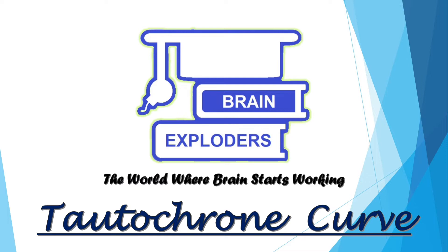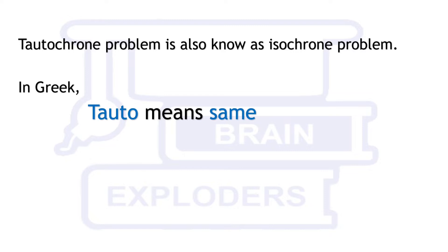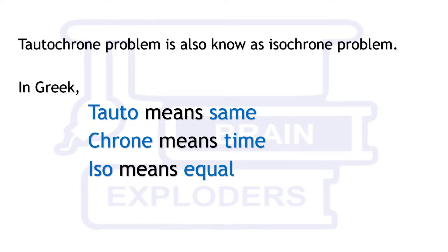Tautochrone problem is also known as isochrone problem. In Greek, prefix tauto means same, prefix iso means equal, and chrone means time.